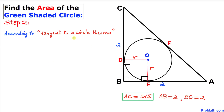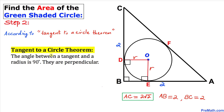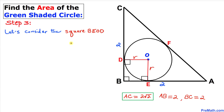Now let's recall the tangent to a circle theorem: the angle between a tangent and a radius is always 90 degrees — they are perpendicular. In our case, this radius and this tangent line have a 90 degree angle, and likewise this other one is 90 degrees as well.